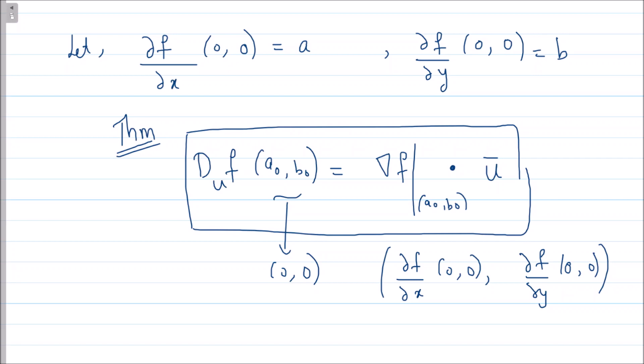So if I apply this theorem for the direction ū, I have Dᵤf(0,0) equals ∇f(0,0) dot product with ū. Now what is given to me? It is given that this is √5, and this is (a, b) because that's the notation I have used, and what is my u? It is (1/√5, 2/√5).